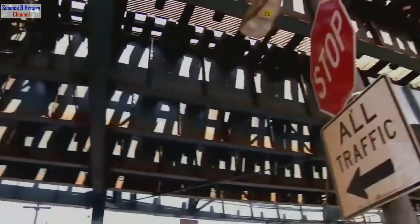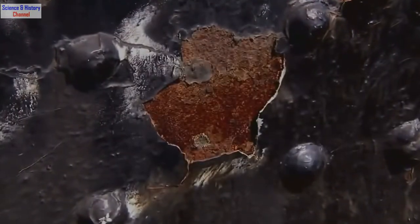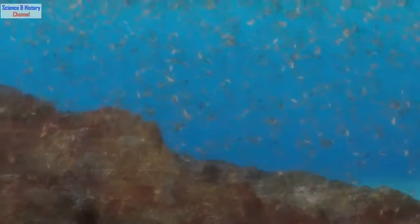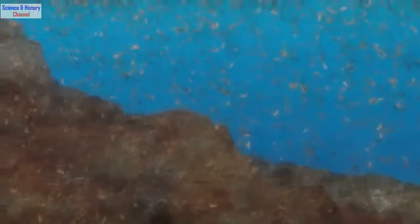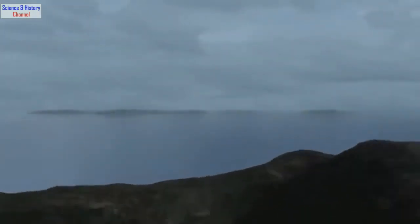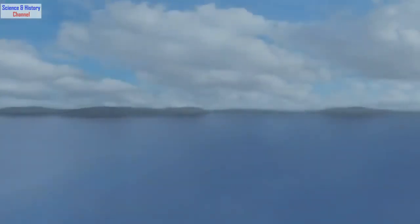Earth's ancient seas are full of iron particles, and everyone knows what happens when oxygen meets iron. This rusted iron collects on the sea floor. Billions of years later, these huge deposits will be raised up to become major sources of the world's iron and steel.